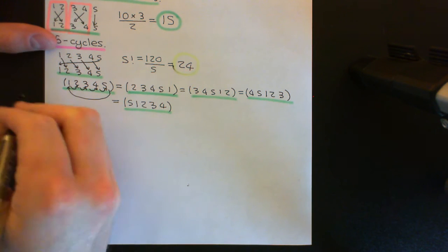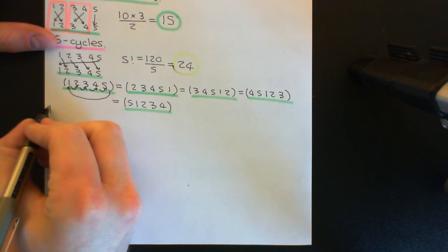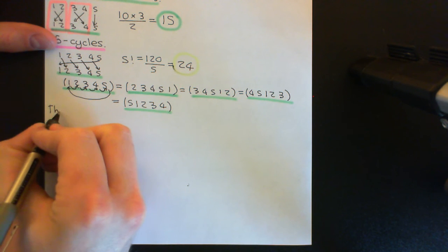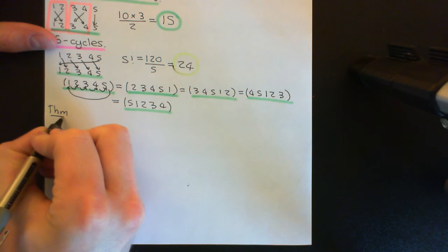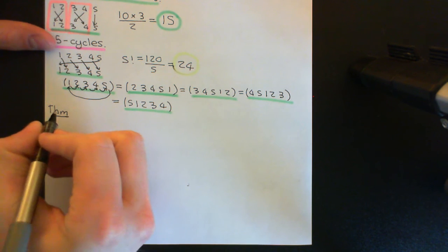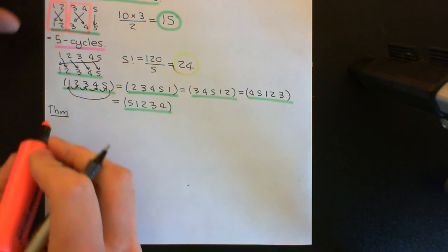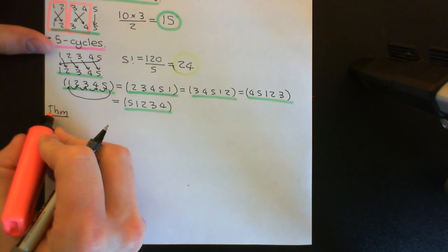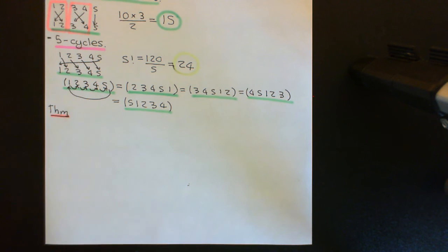So we will call this the major theorem of this video. And we're actually going to prove something that looks slightly more general than proving that A5 is simple, but it will do the job and prove that A5 is simple.